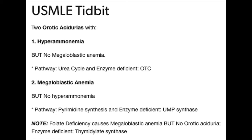This is caused by mutation in one of two genes: either orotic acid phosphoribosyltransferase or orotidine 5'-phosphate decarboxylase. These are autosomal recessive disorders that result in increased orotic acid production in the urine.